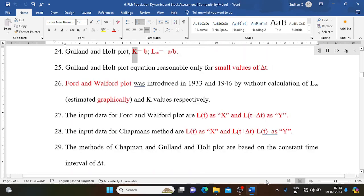Gulland and Holt plot: K equals b, L infinity equals a/b. Gulland and Holt plot equation reasonable only for small values of t. Ford and Walford plot was introduced in 1933 and 1946 without calculation of L infinity (estimated graphically) and K values respectively. The input data for Ford and Walford plot are L(t) as X and L(t+Δt) as Y. The input data for Chapman's method are L(t) as X and L(t+Δt)-L(t) as Y. The methods of Chapman and Gulland and Holt plot are based on the constant time interval of Δt.